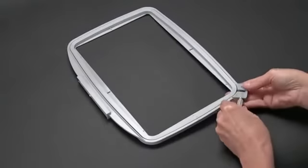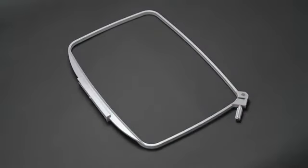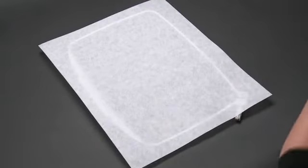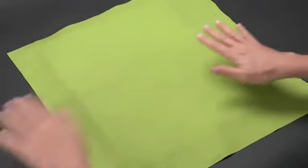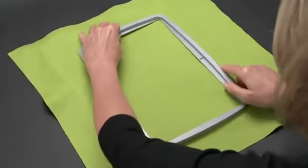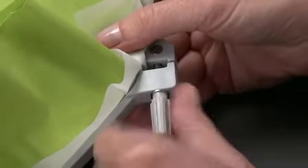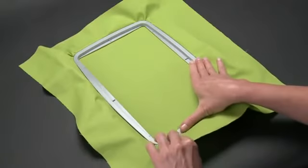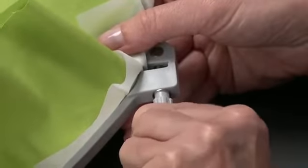Loosen the hoop adjusting screw on the outer frame and remove the inner frame. Place the outer frame onto a flat surface. Place the stabilizer and fabric on top of the outer frame, then place the inner frame on top. Fit the two frames together by pressing down on the inner frame. Tighten the hoop adjusting screw and carefully pull the fabric edges to remove slack. Once the fabric is properly positioned in the embroidery frame with no slack, tighten the hoop adjusting screw securely with one or two turns.